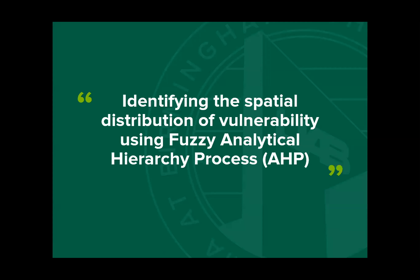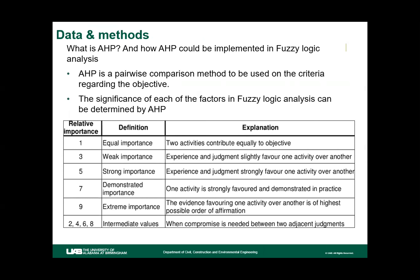Now, Sameen will talk about the vulnerability index using the fuzzy analytical hierarchy process. Our second goal was to identify counties most vulnerable to COVID-19, so we used integrated fuzzy logic with the Analytical Hierarchy Process (AHP). AHP was developed by Thomas L. Saaty and is a pairwise comparison method used to rank several criteria. The significance of each factor is ranked using the AHP method. The scale uses nine choices for pairwise ranking: a rank of one means both factors contribute equally, while a rank of nine means the first factor strongly dominates the second.